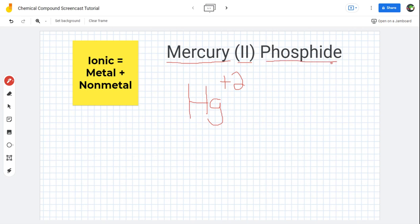Now, phosphide is just the normal element phosphorus on the periodic table. It's not a polyatomic ion because it ends in ide and it's not part of the list on our periodic table. Phosphorus typically has a charge of minus 3.